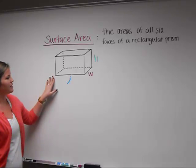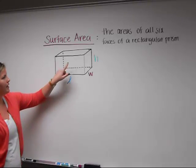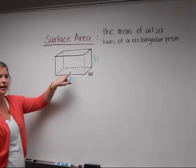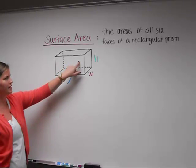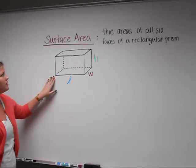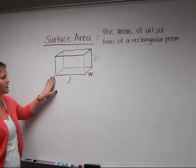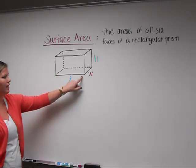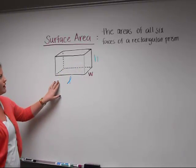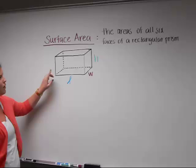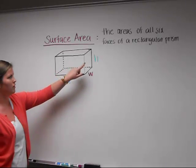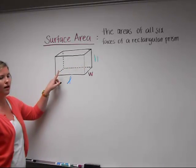We can see that this rectangular prism has six faces, and that each face has a twin on the opposite side of the prism. To find the area of a rectangle is the length times the height. So to find the surface area, we want to find the sum of each area of each rectangle.